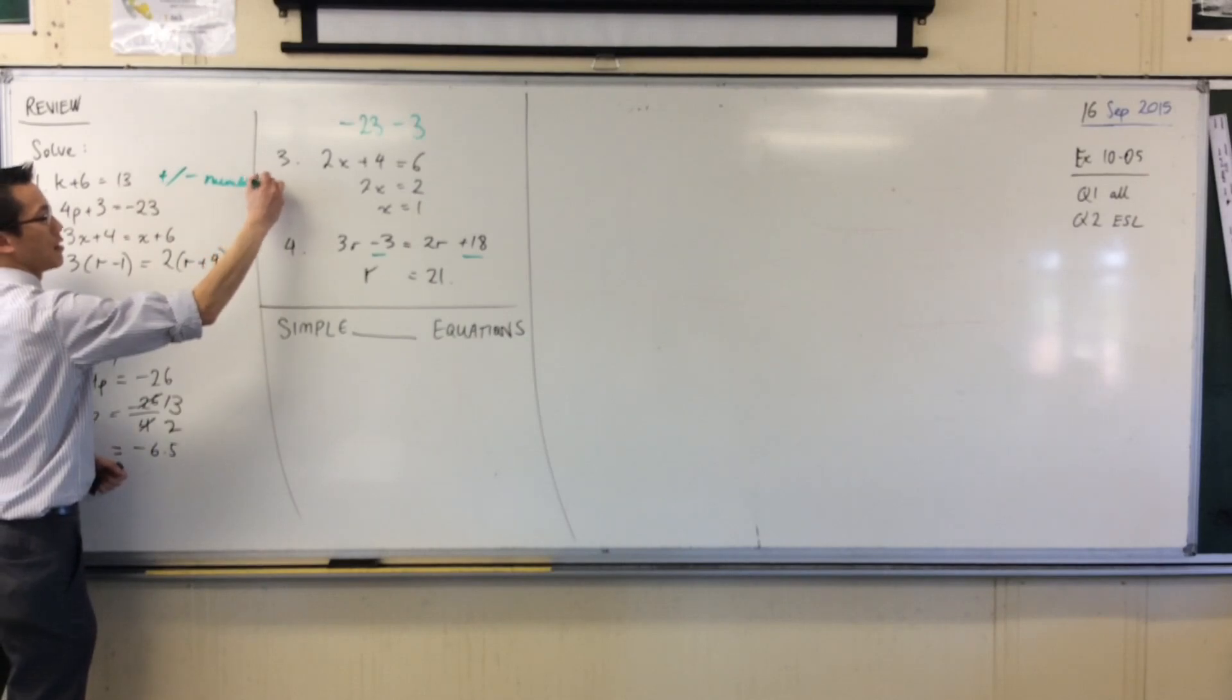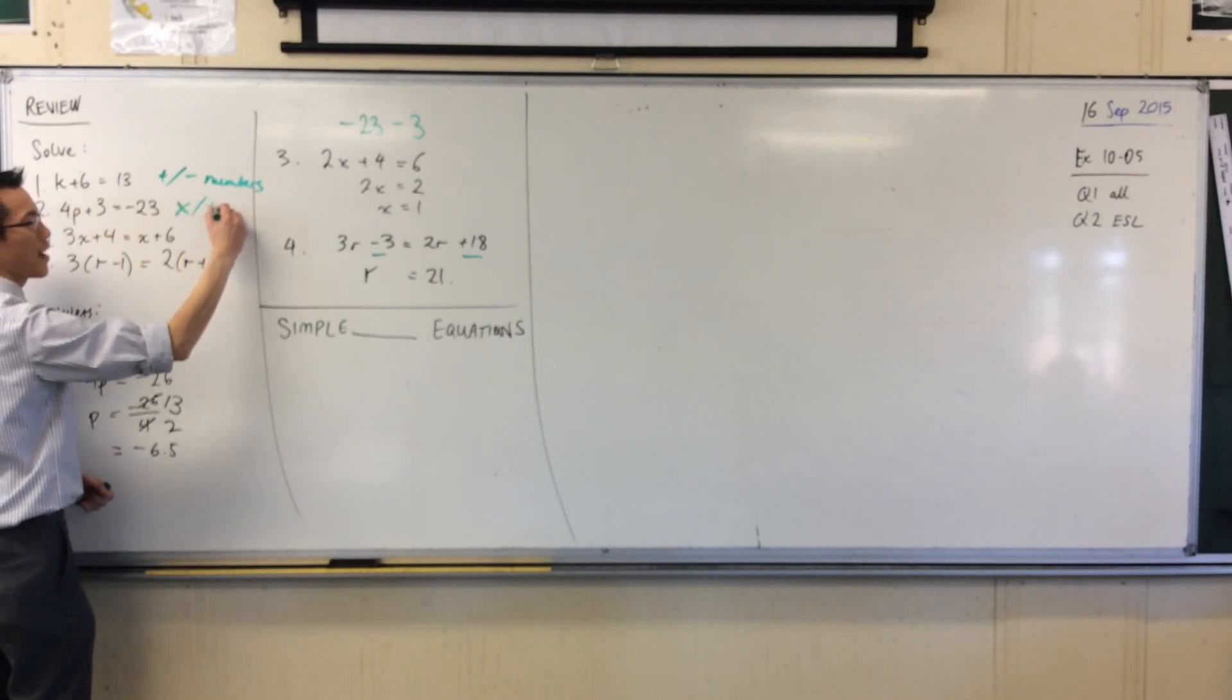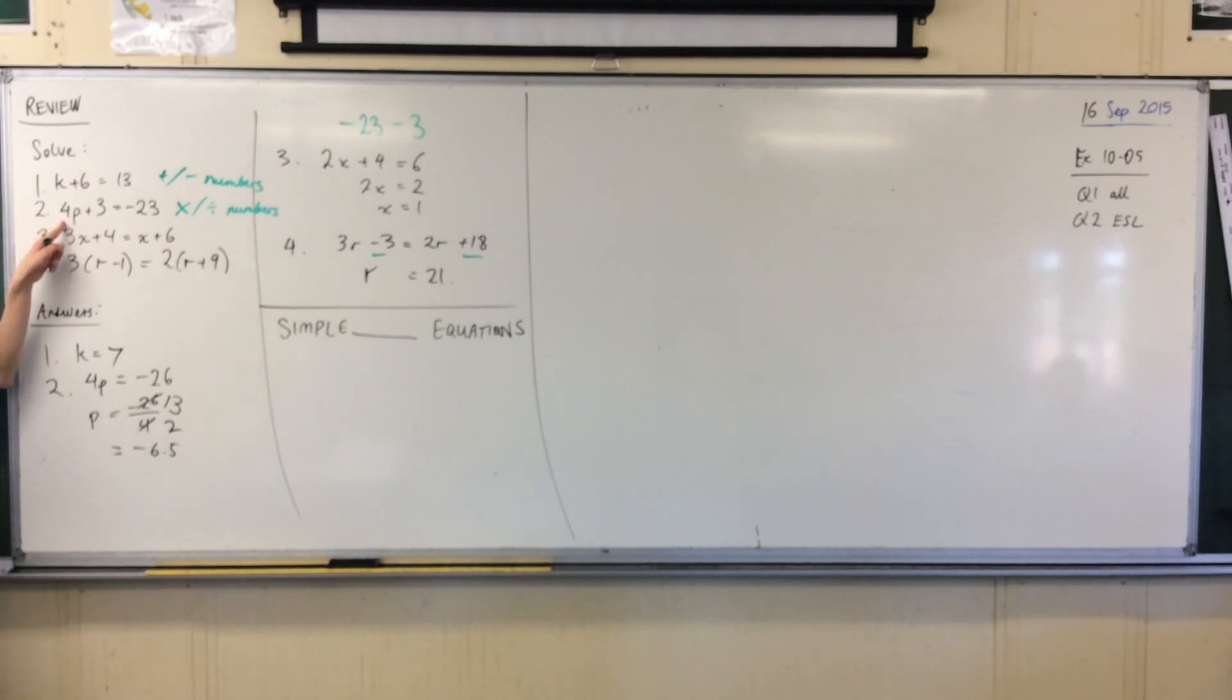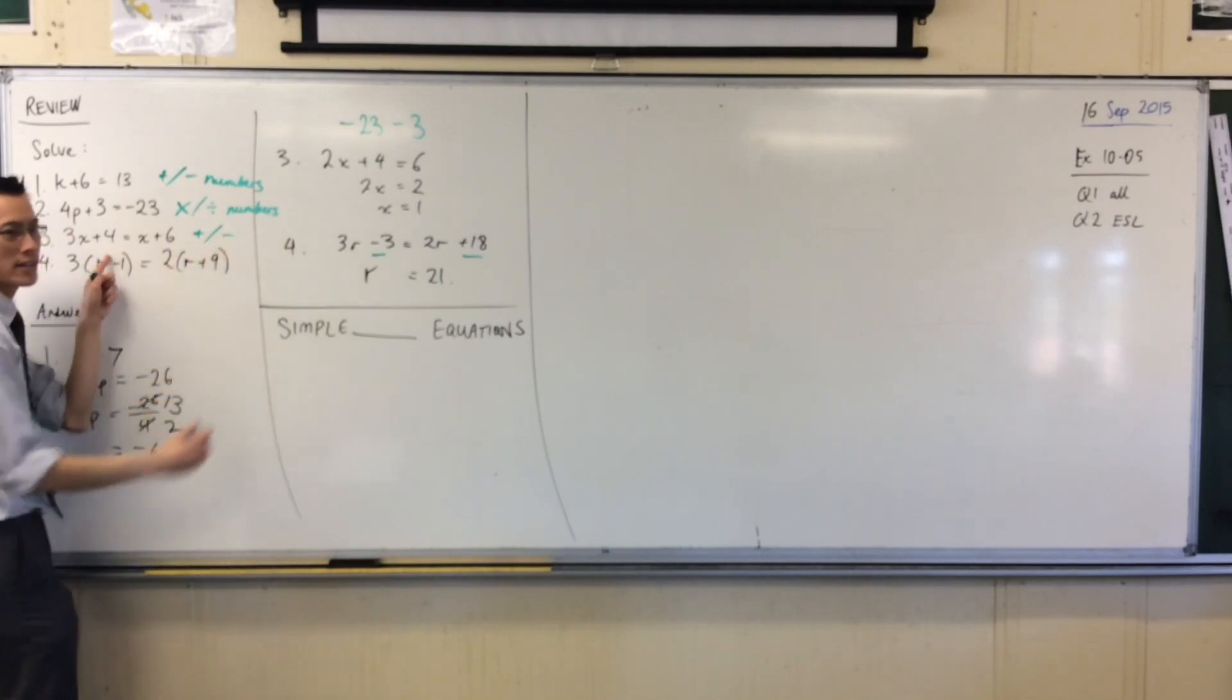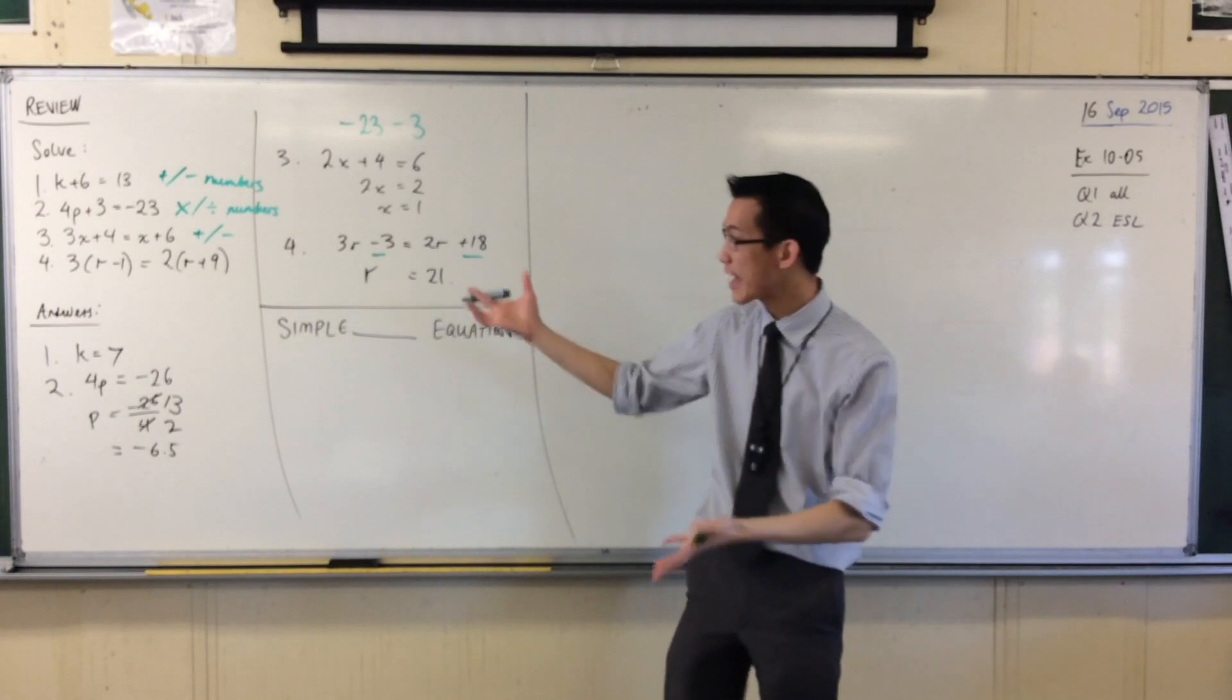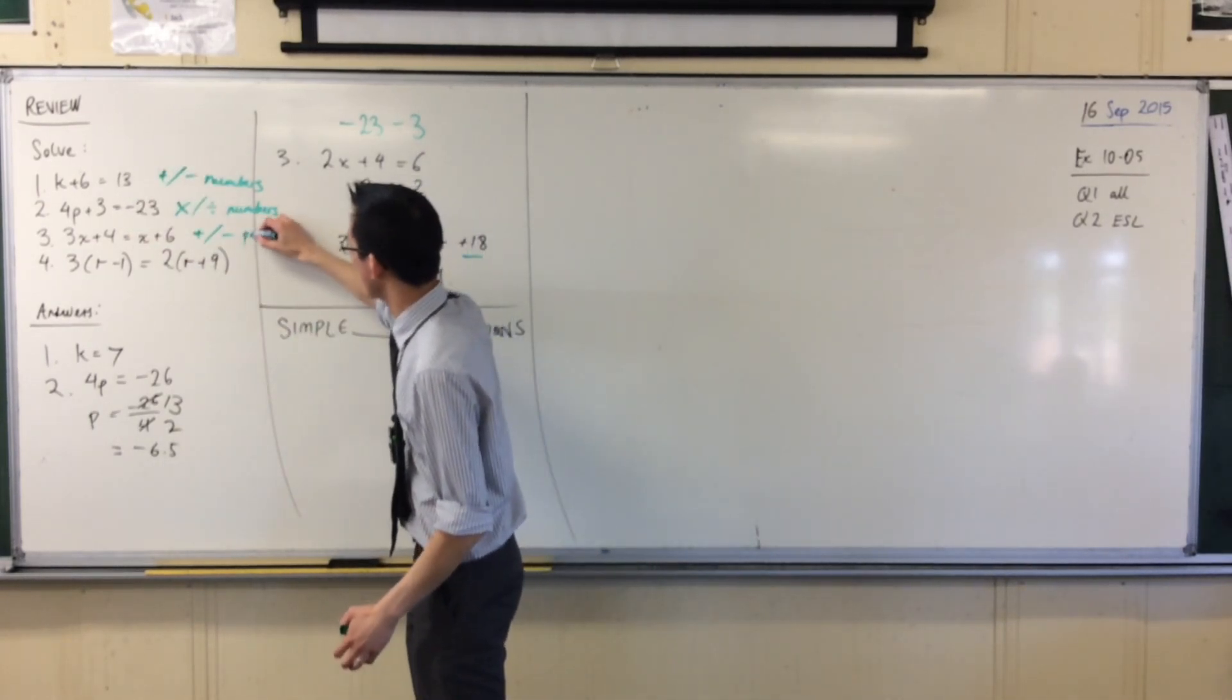Here, we're adding and we're subtracting numbers. That's what plus six is. We're multiplying and dividing by numbers. Do you see that? Like there's four at the front, which is multiplication. And then for this one, what we're doing is we're adding or subtracting, not numbers, but pronumerals. Like more X's or more R's or K's or whatever, okay? So I'm going to write pronumerals here.